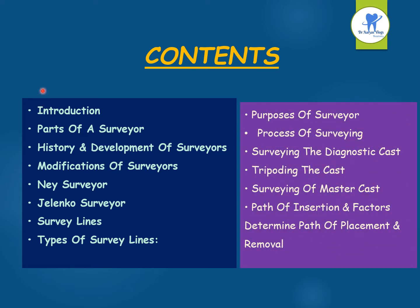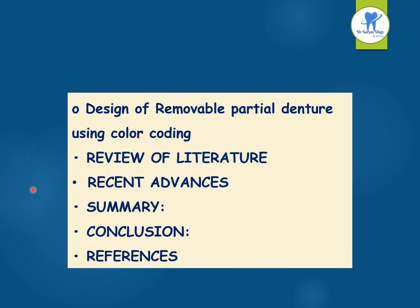In part 2, we have discussed purposes of surveyor, the process of surveying in detail, surveying the diagnostic cast, tripodizing the cast, surveying of the master cast, path of insertion and factors determining path of placement and review. And in part 3, we will discuss design of RPD using colour coding, review of literature, recent advances, summary, conclusion and finally references. These are the various titles which should be included in your essay.